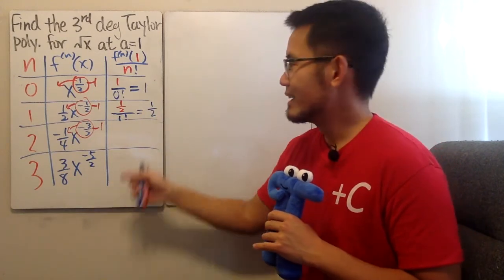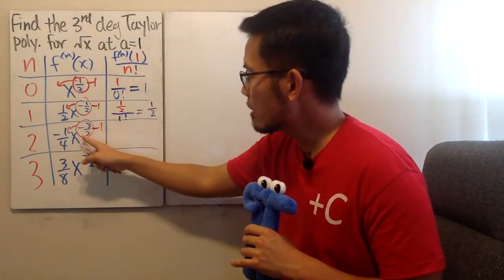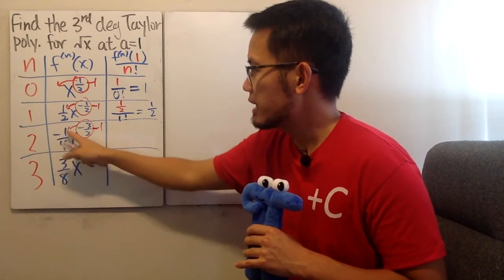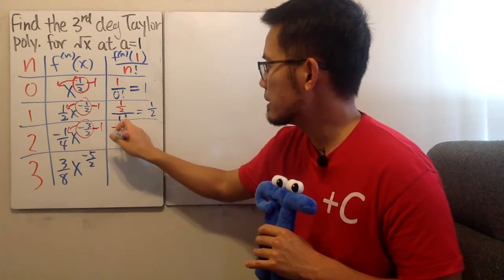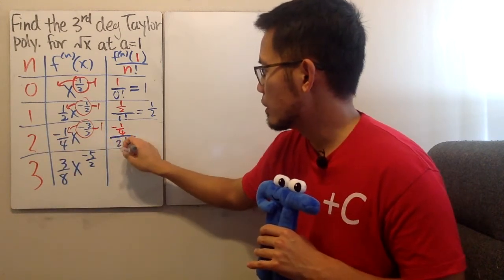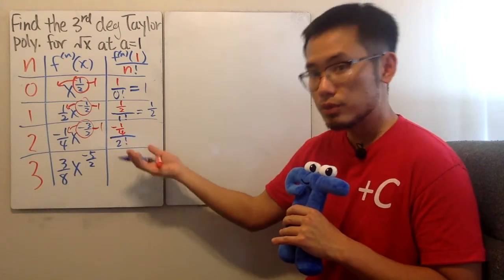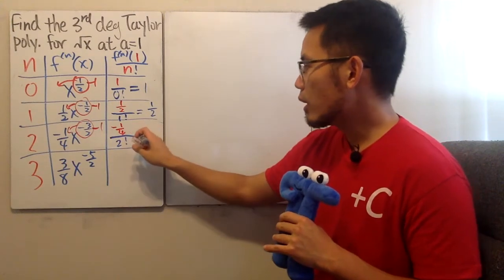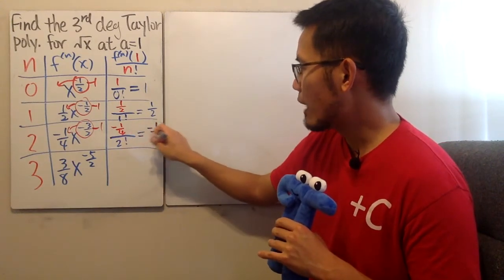However, for the next one, when we're putting the 1 in here, this is negative 1 over 4 on the top. But we really have to divide it by 2 factorial now. And 2 factorial is the same as 2 times 1, which is just 2. So all in all, this becomes negative 1 over 8.